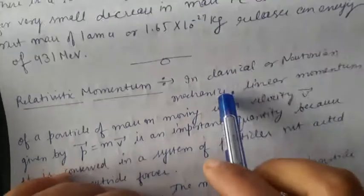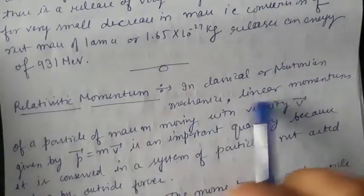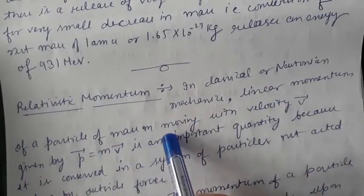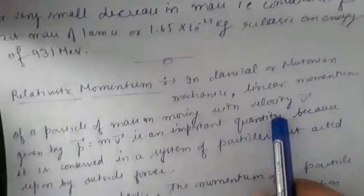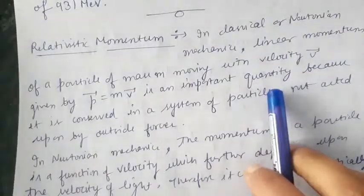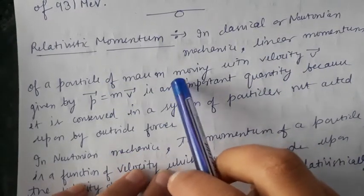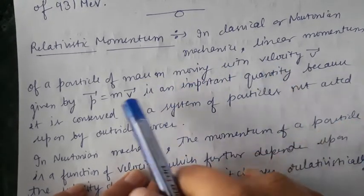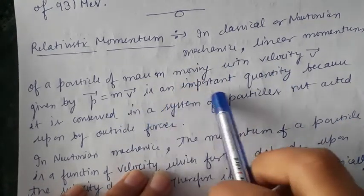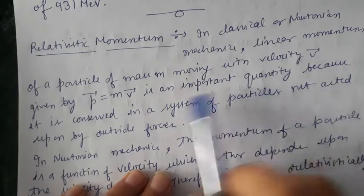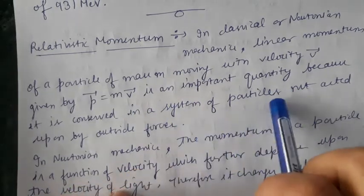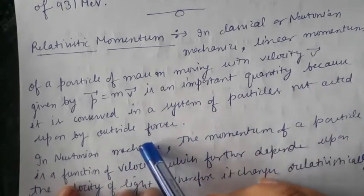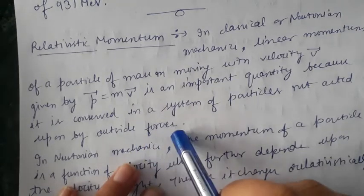In classical Newtonian mechanics, linear momentum of a particle of mass m moving with velocity v is given as p = mv. This is an important quantity because it is conserved in a system of particles not acted on by outside forces.